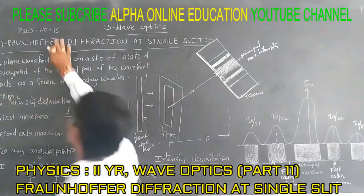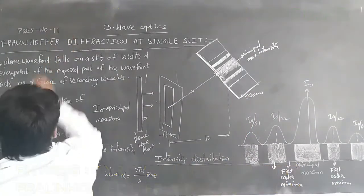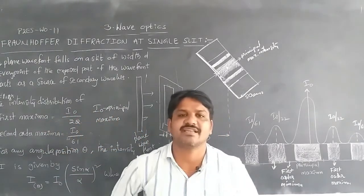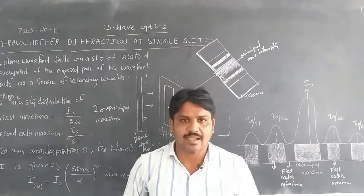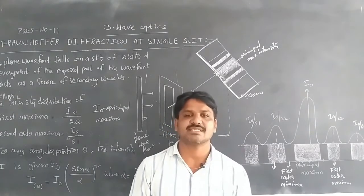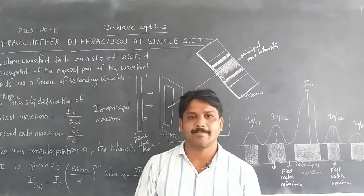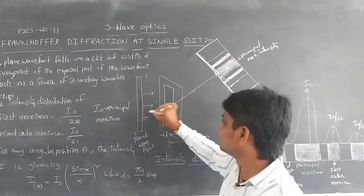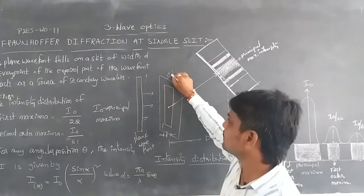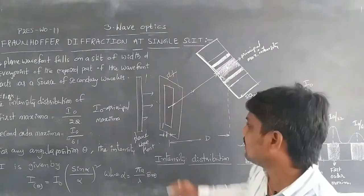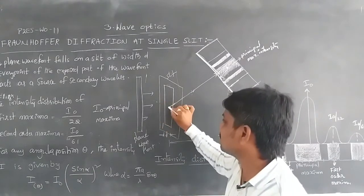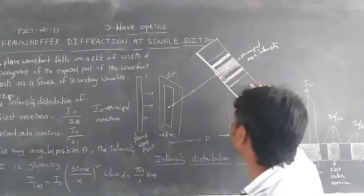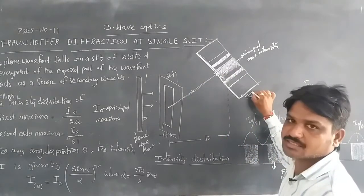Fraunhofer diffraction at a single slit occurs when the light source is at an infinite distance from the screen, so the wavefront incident on the slit is a plane wavefront. When this plane wavefront falls on the slit, secondary wavelets travel parallel to each other toward the screen.